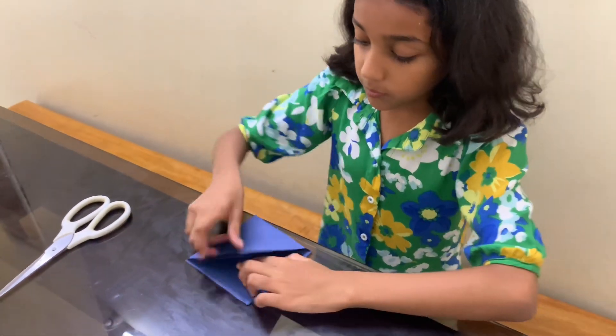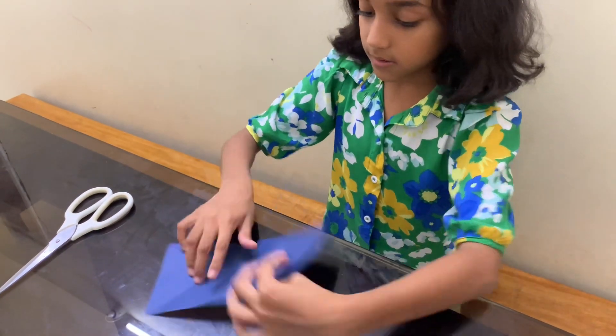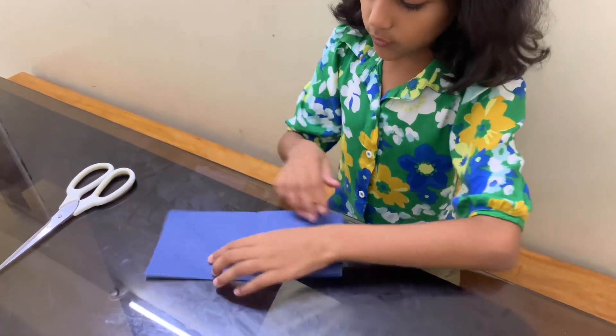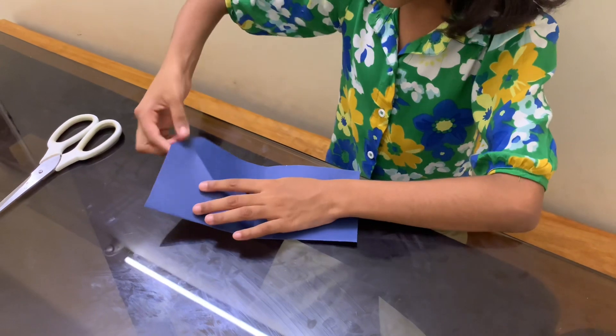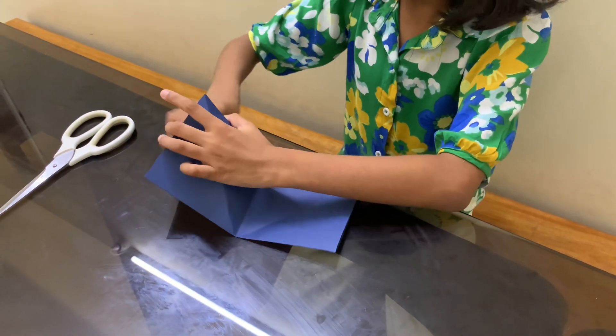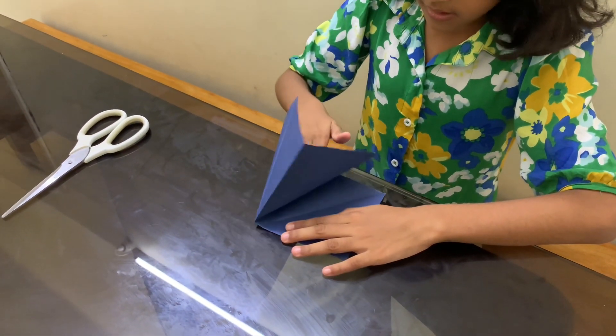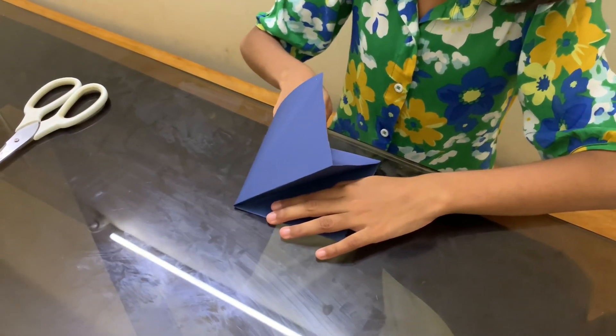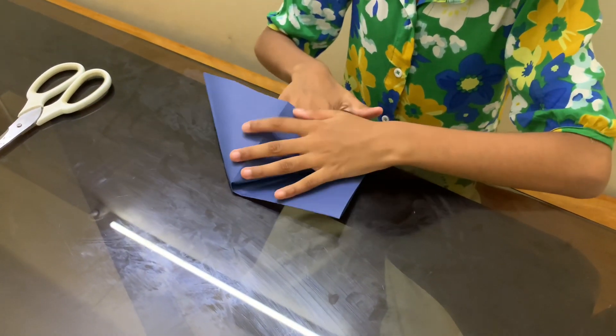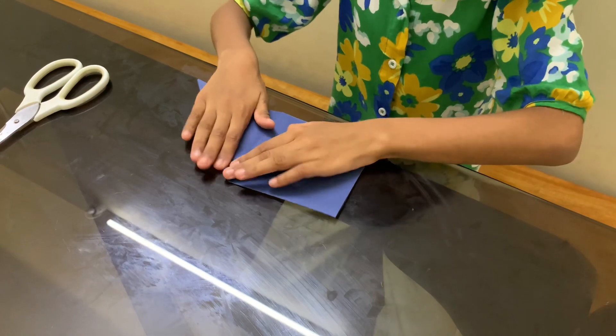Then, you have to open to the surface. Then, you have to take this edge. Be careful guys. So, we will have to put it like this, and fold this little bit, and fold it like to a triangle shape.